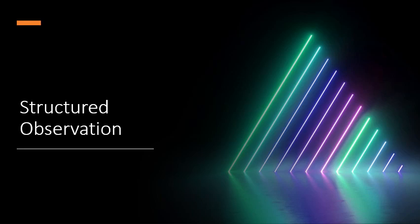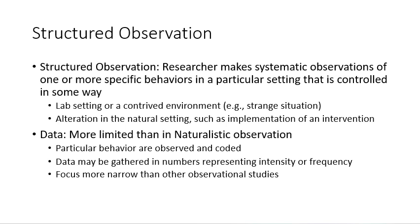Structured observation is our next type. The researcher makes systematic observations of one or more specific behaviors in a particular setting that's controlled in some way — it might be a lab, a contrived environment, or a natural setting where something is occurring. The data are more limited than in naturalistic observation because you're looking for a particular behavior and have spent a lot of time learning how to code those behaviors. Data might be gathered in numbers representing intensity or frequency, giving a quantitative component, and the focus is usually more narrow than other observational studies.